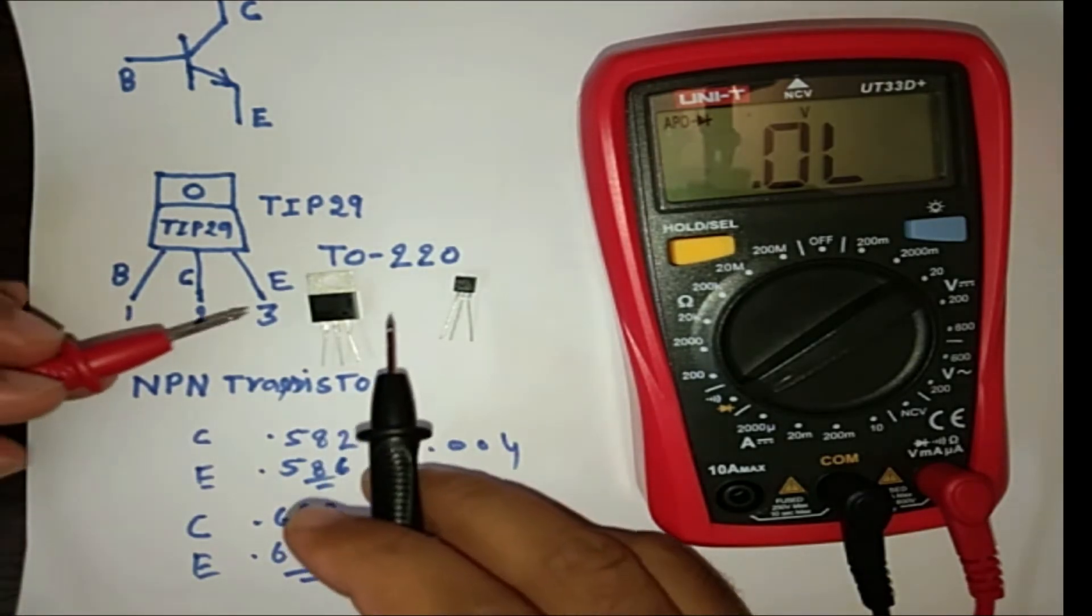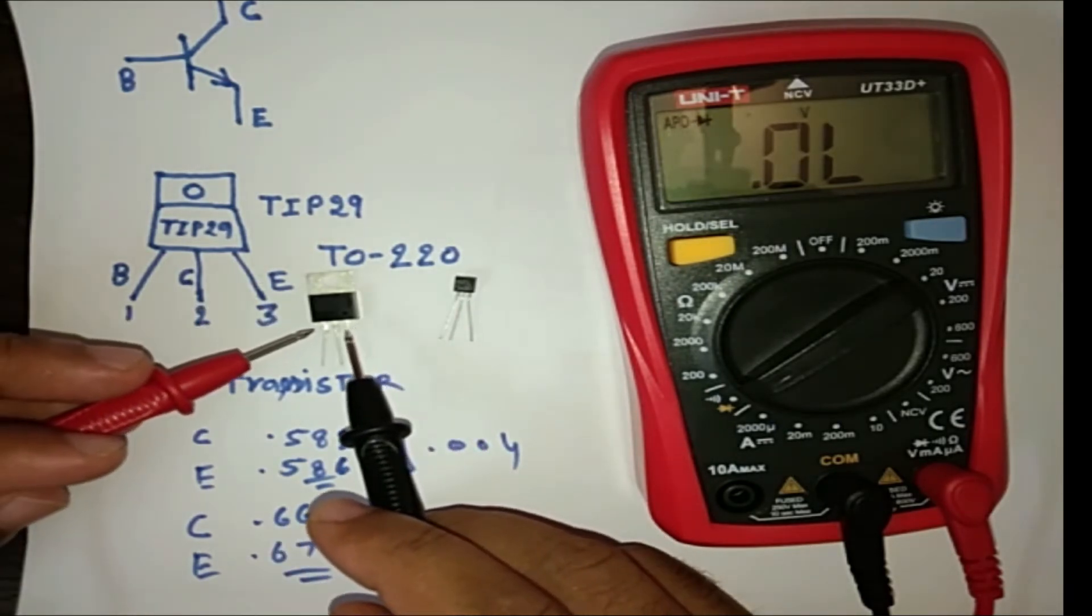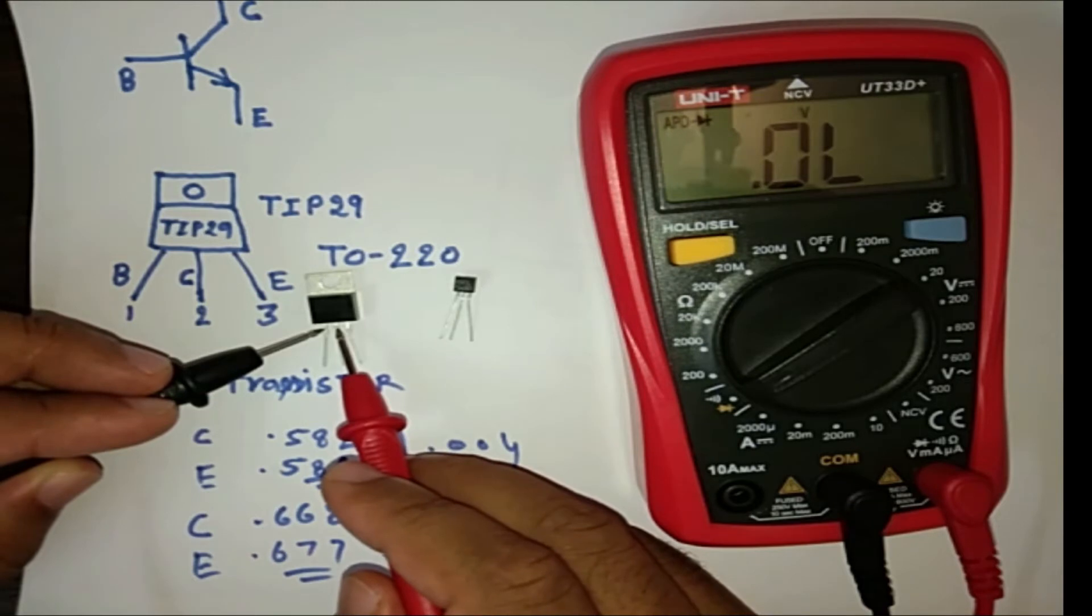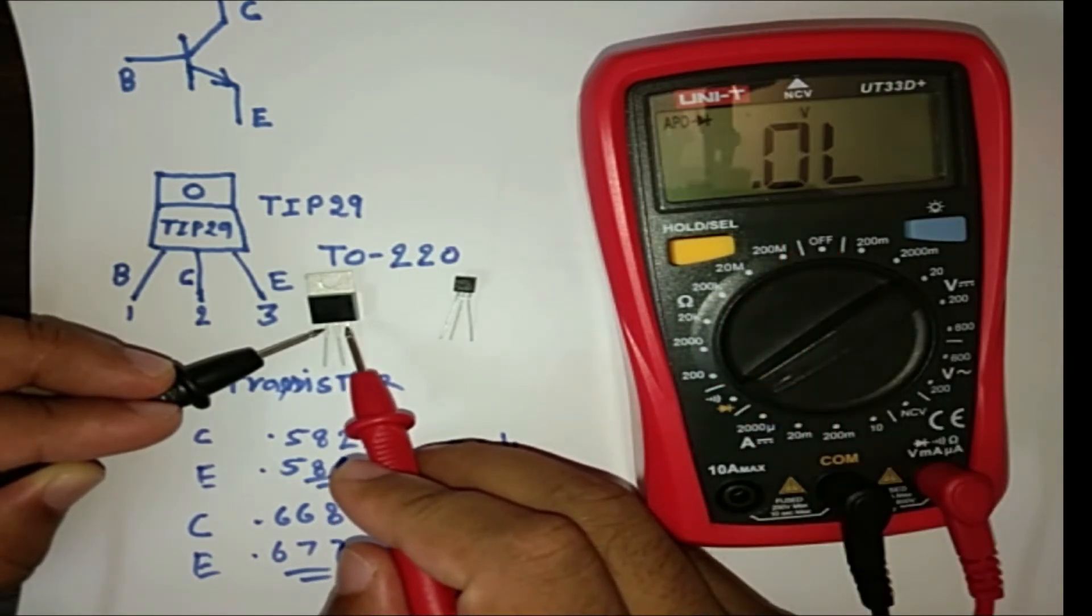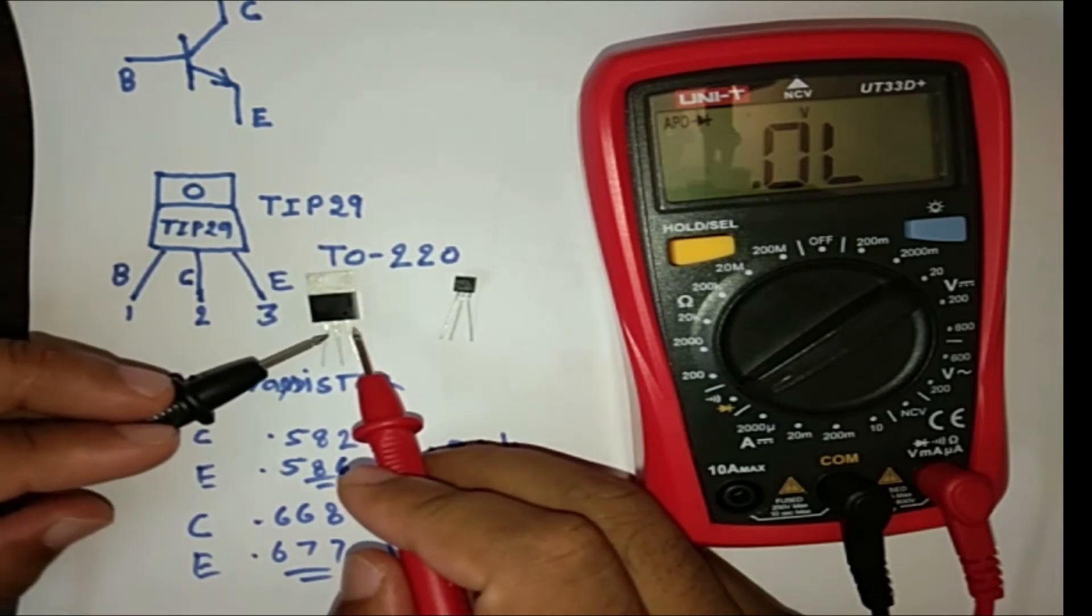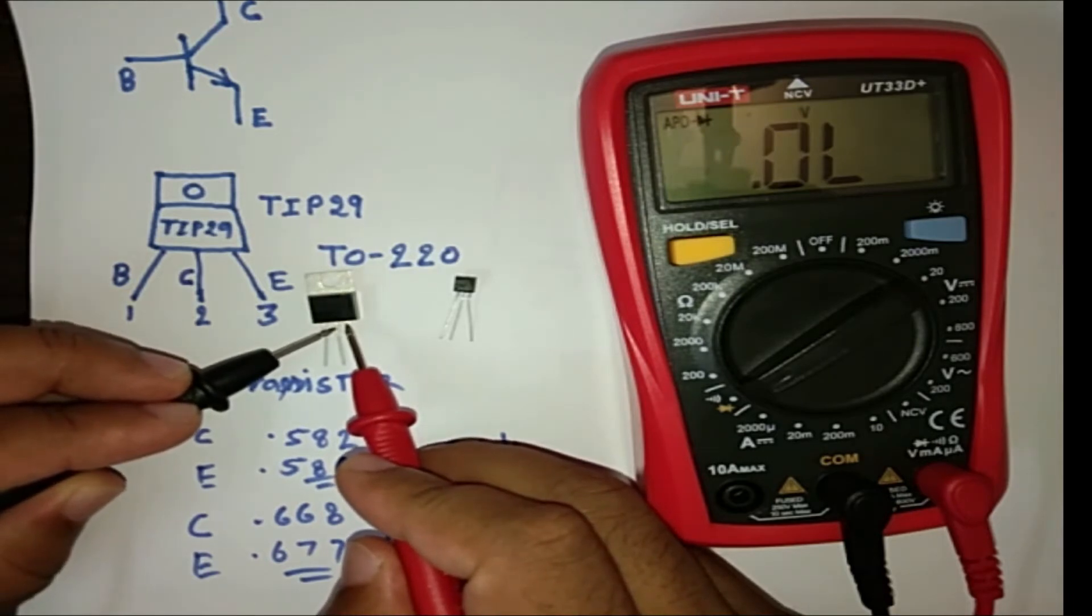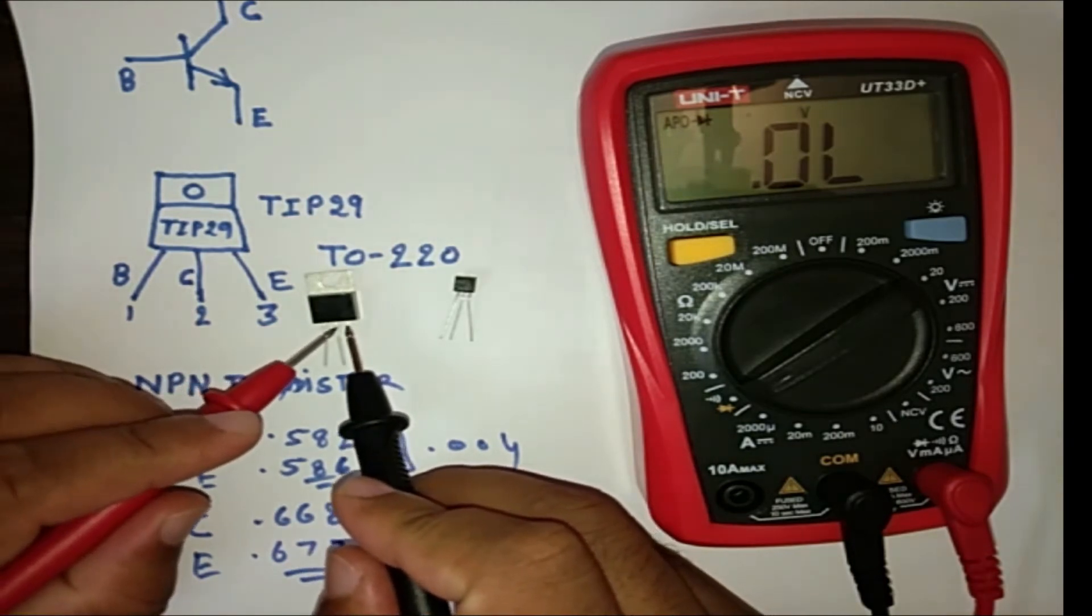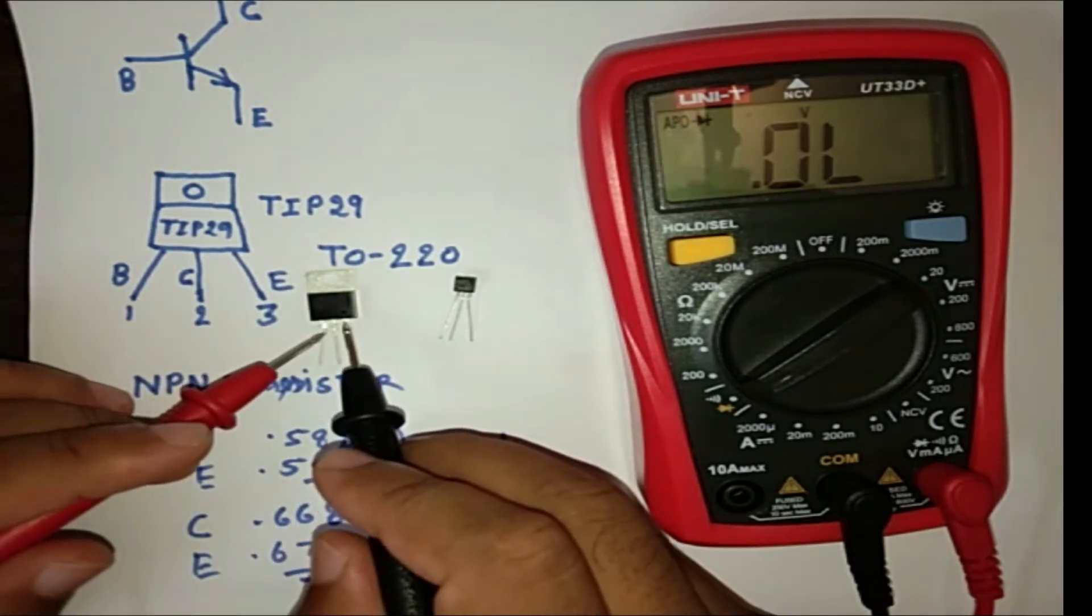And as per my video on small transistor testing, in all other conditions, if you put the black lid here, so at the base, it will show the open. Black lid at the base. And red on the collector, it will show open. You can see here. Open. And if you put at the emitter, it will show open. And if you put the lid at the collector and emitter, it will show open also. And if you do vice versa, so it will show also open. So in all conditions, transistor will show the open condition. Only in this condition, it will show some value.